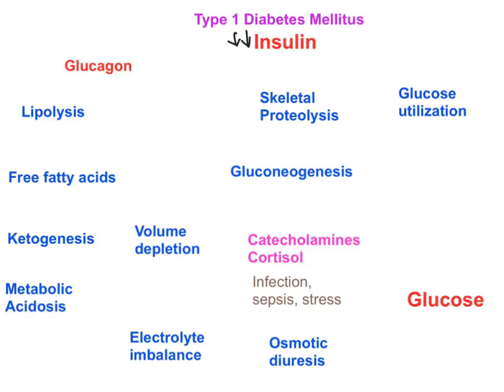A decrease in insulin level leads to decreased peripheral utilization of glucose. This happens because GLUT4 transporters, which need insulin, are present especially on skeletal muscle and adipose tissue — these tissues won't be able to consume glucose. This decreased peripheral utilization of glucose leads to elevation of blood glucose level, resulting in hyperglycemia.